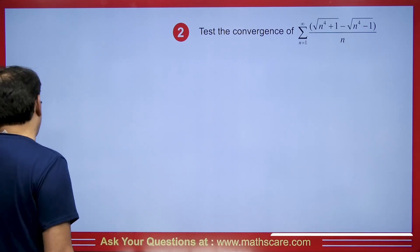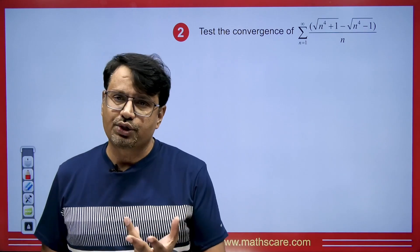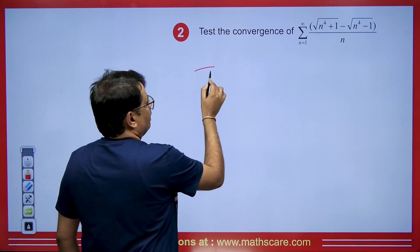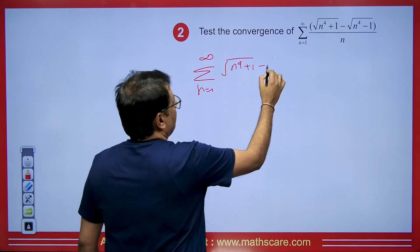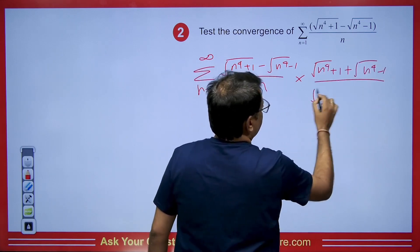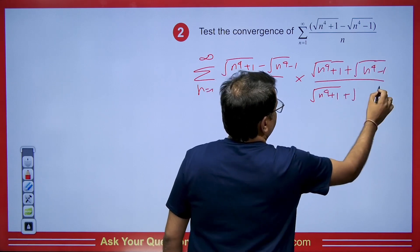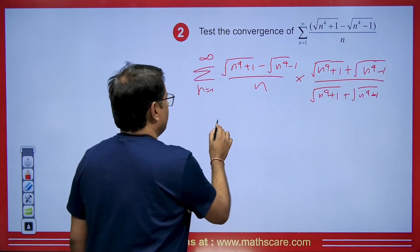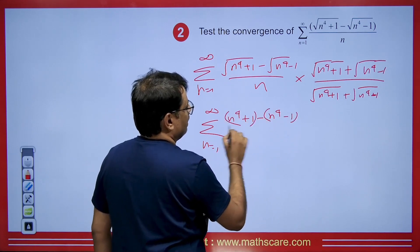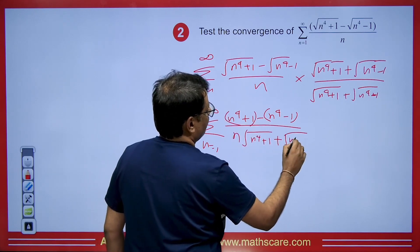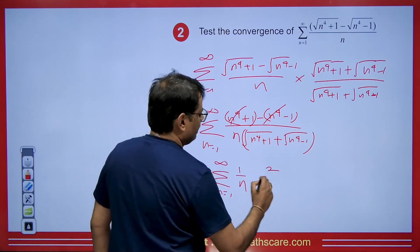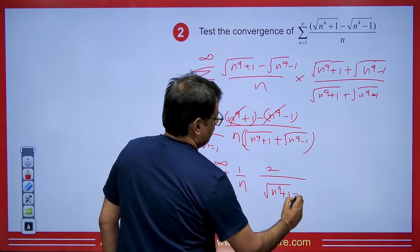Let's proceed with another example. We need to test convergence of the summation from n = 1 to infinity of (√(n⁴+1) − √(n⁴−1)) / n. Let's rationalize it. Multiplying numerator and denominator by (√(n⁴+1) + √(n⁴−1)), we get (n⁴+1 − (n⁴−1)) in the numerator using the identity (a−b)(a+b) = a²−b², giving 2 in the numerator. The denominator becomes n·(√(n⁴+1) + √(n⁴−1)). So we rewrite this as summation of (1/n) · (2 / (√(n⁴+1) + √(n⁴−1))).